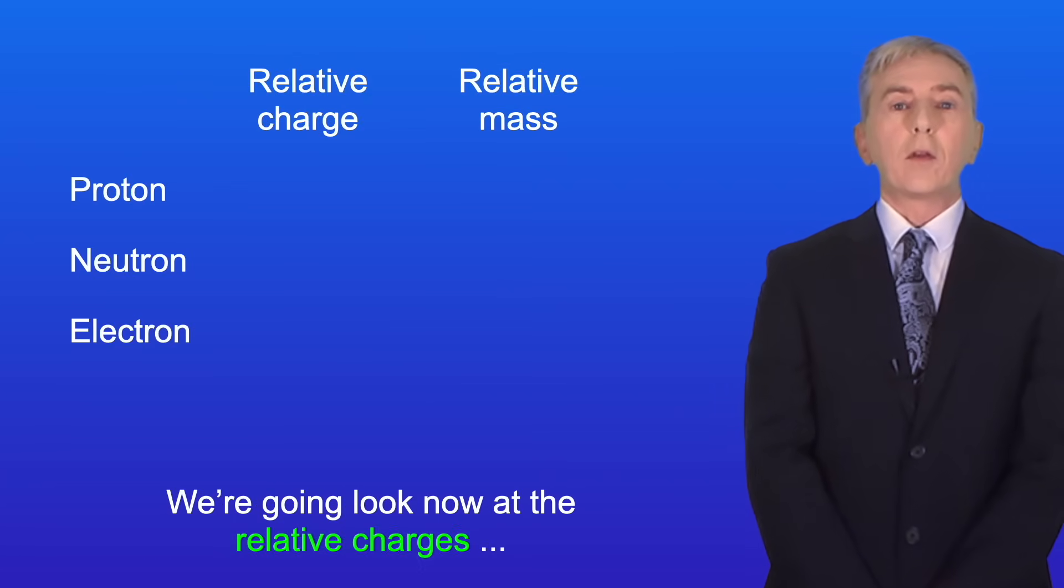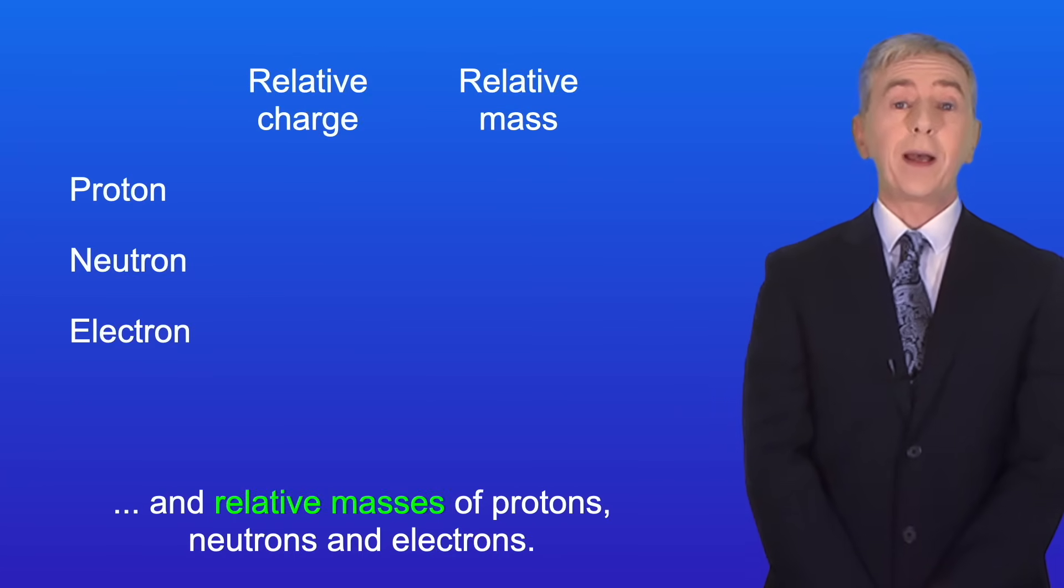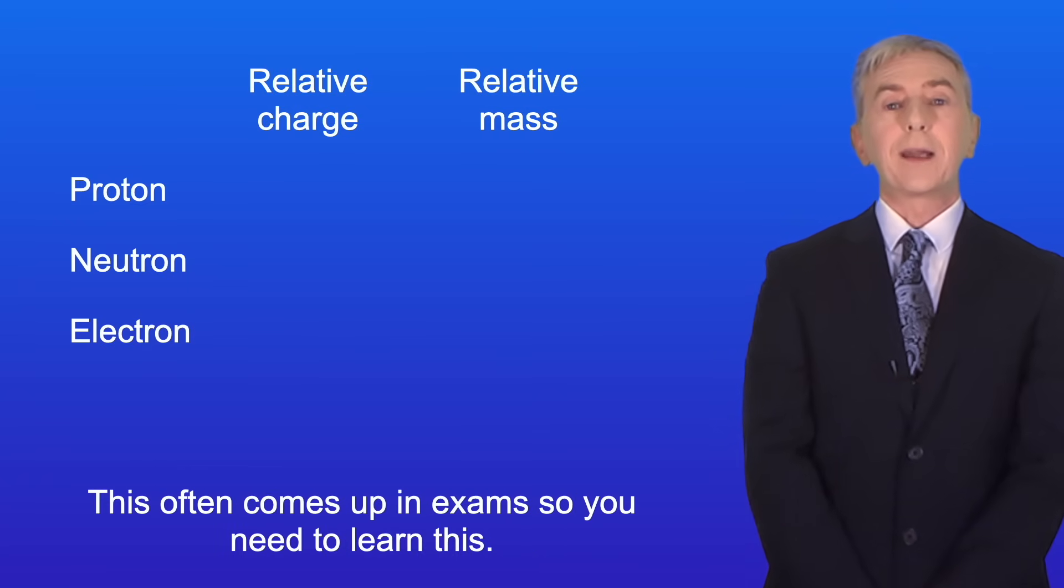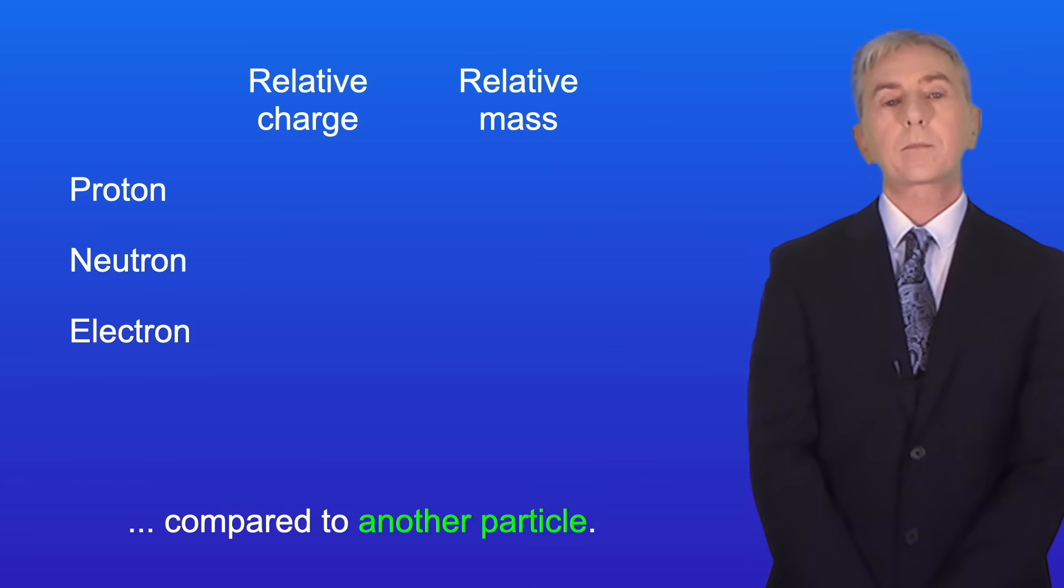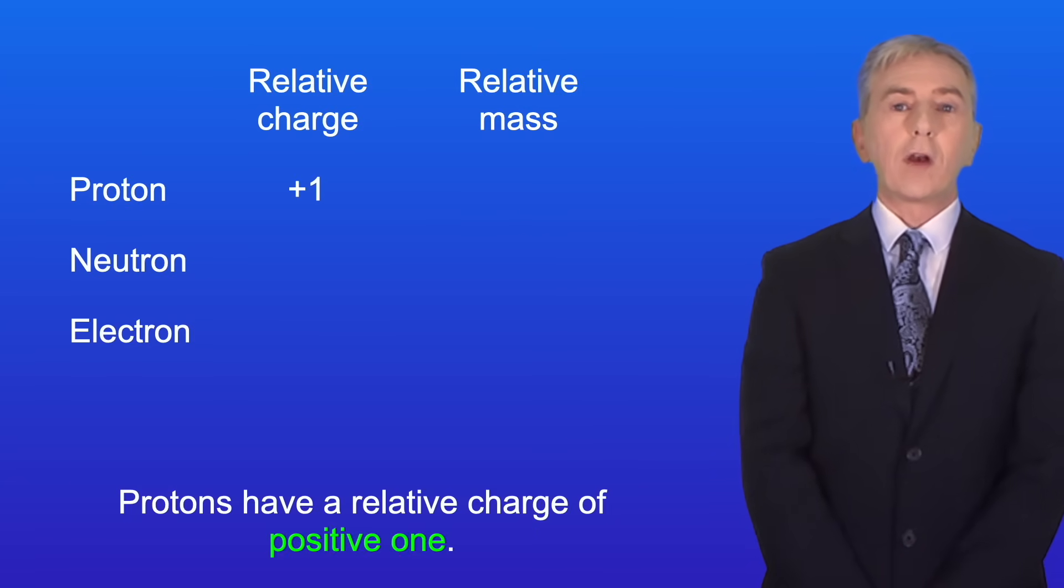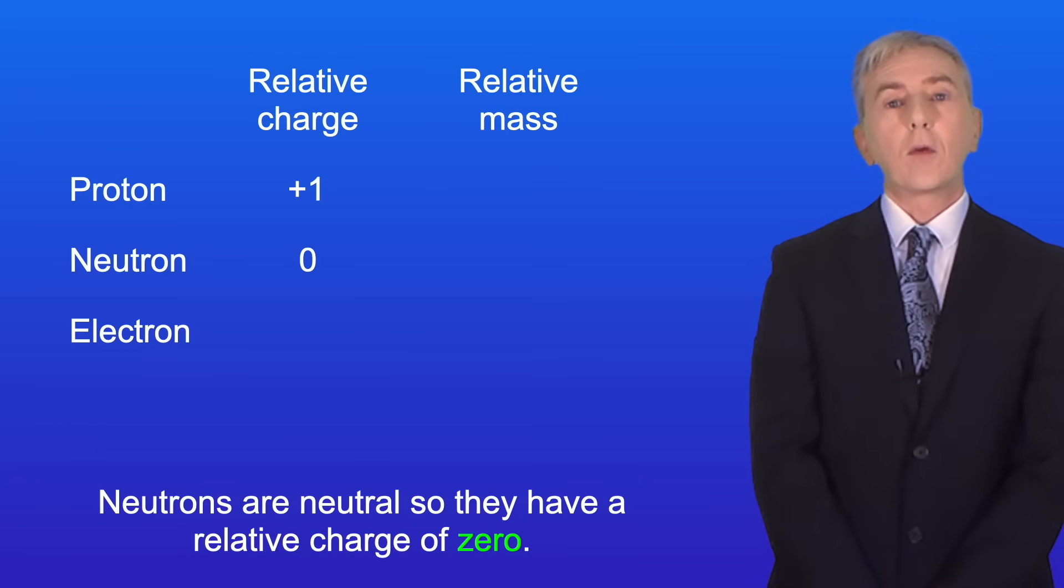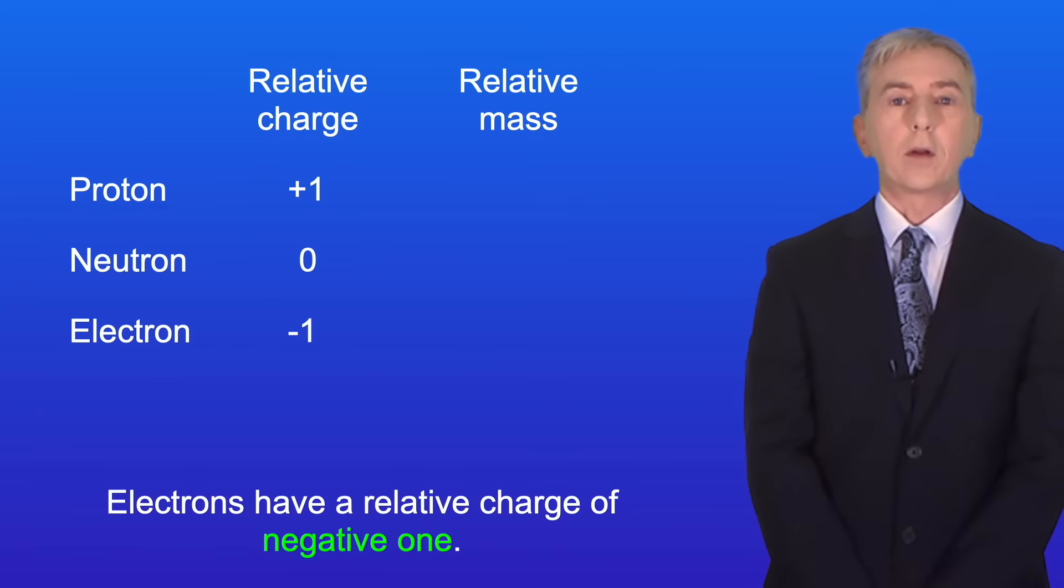We're going to look now at the relative charges and relative masses of protons, neutrons and electrons. This often comes up in exams so you need to learn this. The words relative charge mean the charge of one particle compared to another particle. Protons have a relative charge of positive one. Neutrons are neutral so they have a relative charge of zero and electrons have a relative charge of negative one.